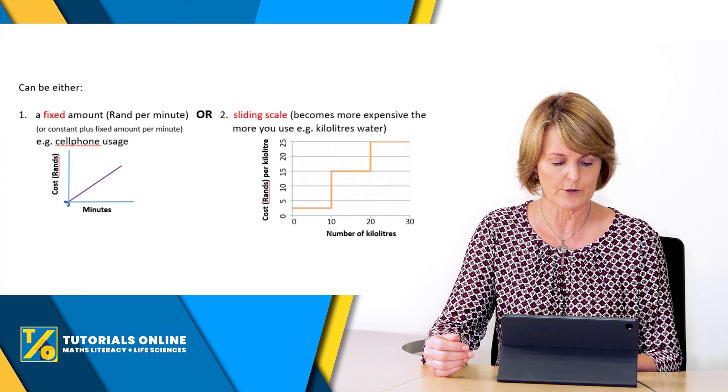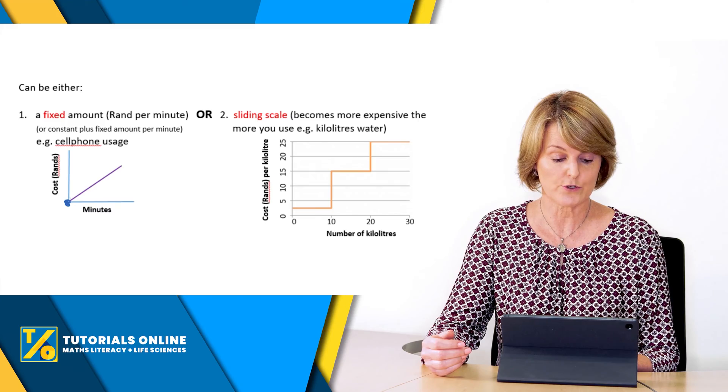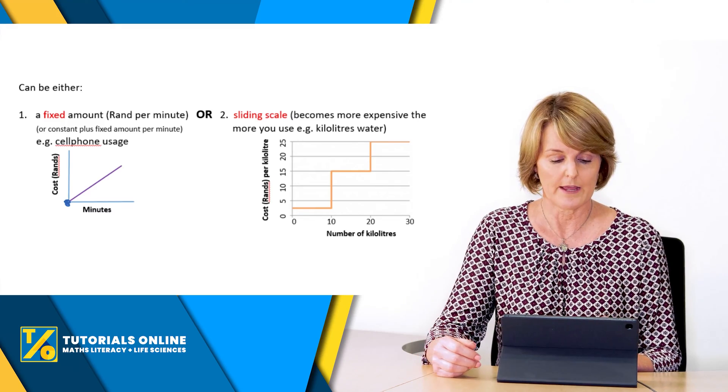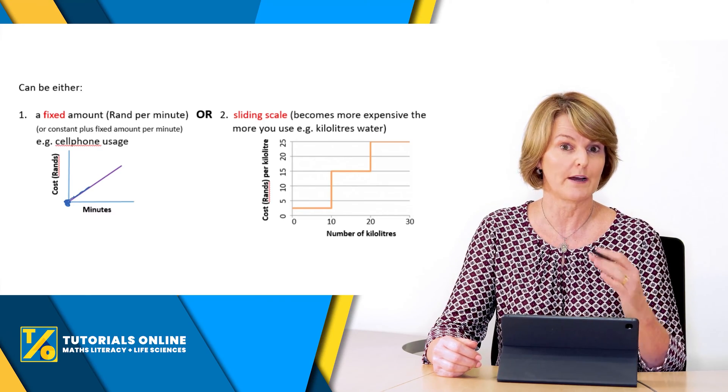If at the bottom here you can see zero minutes then no cost, but as you talk, say it could be for example two rand per minute, then for every minute the graph will go up and up in a straight line.